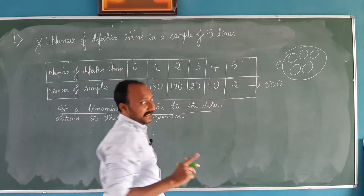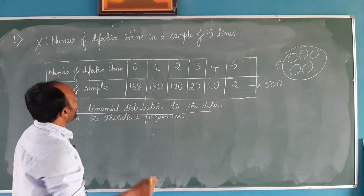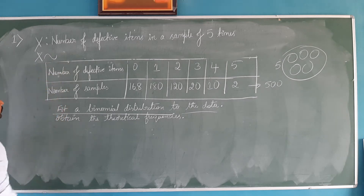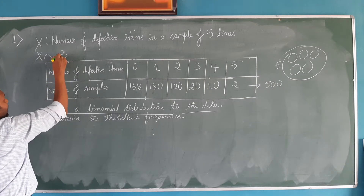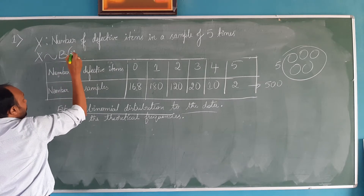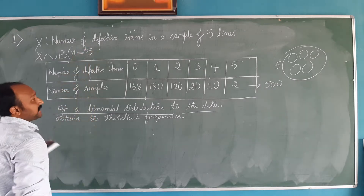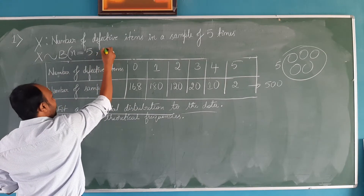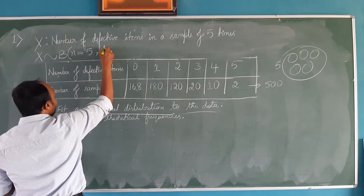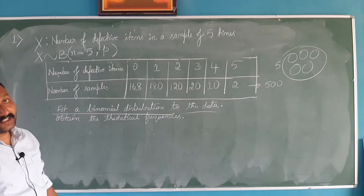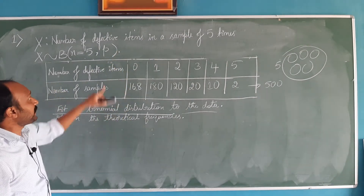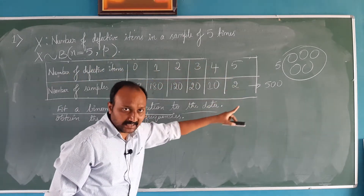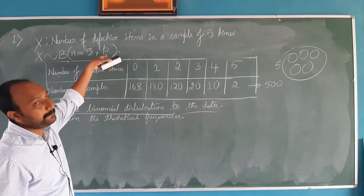In a sample there are 5 items; out of those 5 items, how many defectives are there? X is a random variable, and we need to find how it is behaving. We need to find the probability of success parameter, the p-value. It can be estimated from the given data. Using this data, we can find what is the probability p-value.